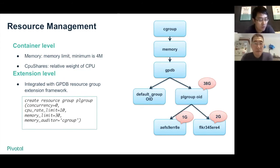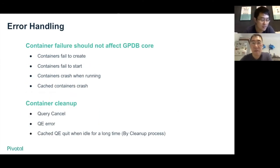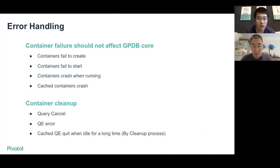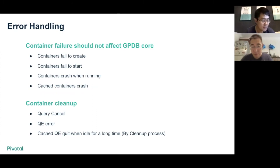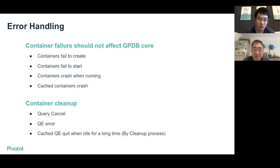The most important thing is that container failure should not affect the GPDB query engine. There are some cases the container may fail: fail to create, fail to start, crash when running, or the cached container may crash. We use try-catch to protect the GPDB query engine and redirect error messages to the user. We also consider container clean-up since the query may be cancelled, the query executor may encounter an error, or a cached QE may quit after being idle for a long time. We use a separate clean-up process to delete containers when these cases happen.